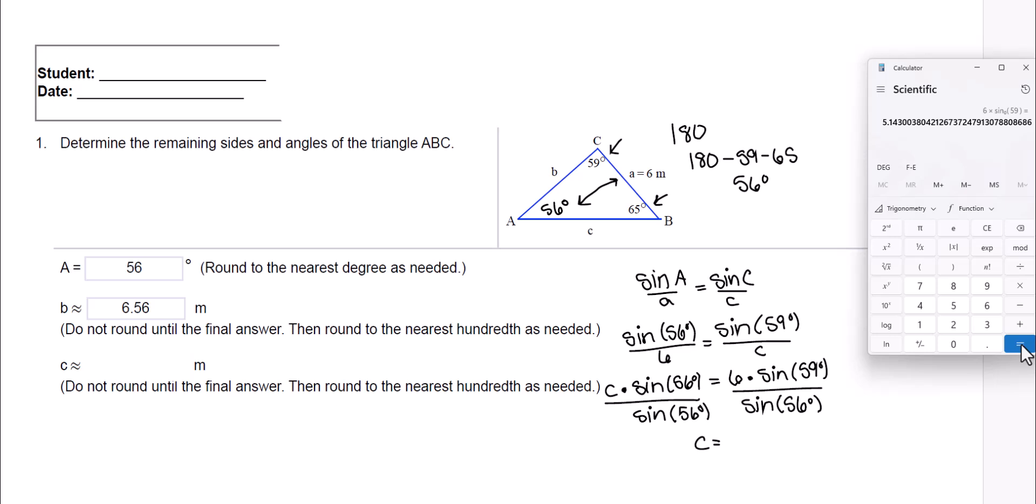Alright, super, super important. Divide by, then we have the sine of 56. I'm going to do 56, and then the sine, and I have to click equals. And we end up with 6.203.